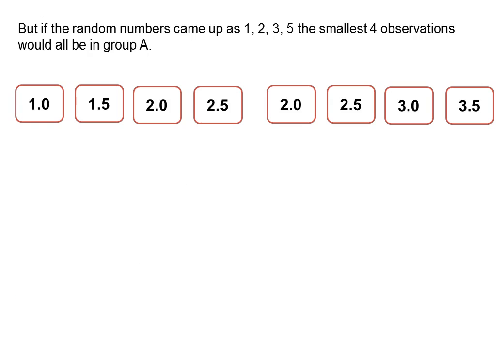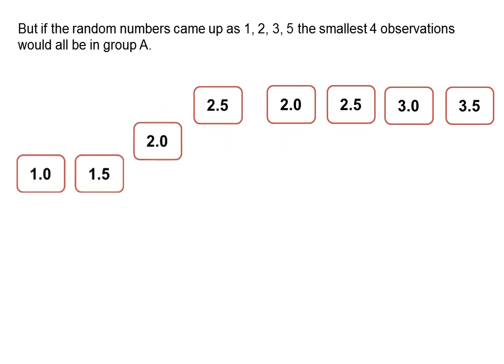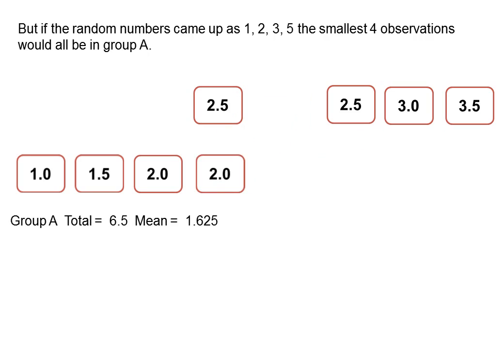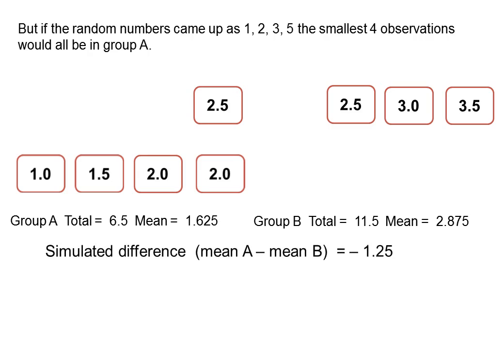Take another example. If the random numbers came up as one, two, three and five, that happens to be the smallest four observations and they'd all be in group A. So that's one, two, three and five. The total for group A is 6.5, the mean is 1.625. For group B, the total is 11.5, mean 2.875. And the simulated difference, mean A minus mean of B is minus 1.25. And that's the smallest difference you can get. At least it's the most negative difference you can get.